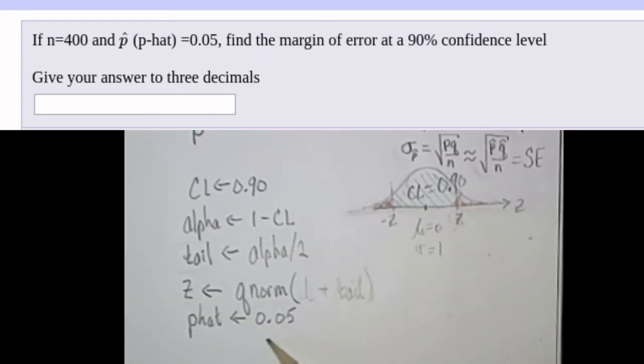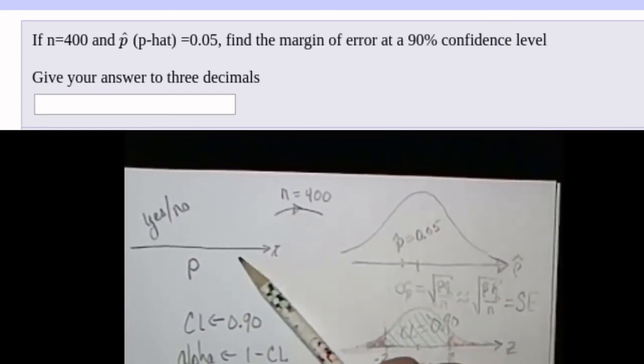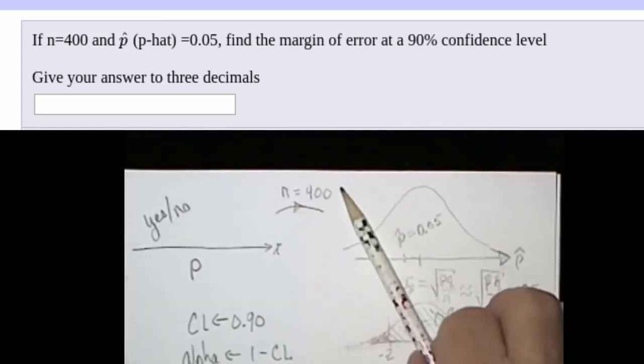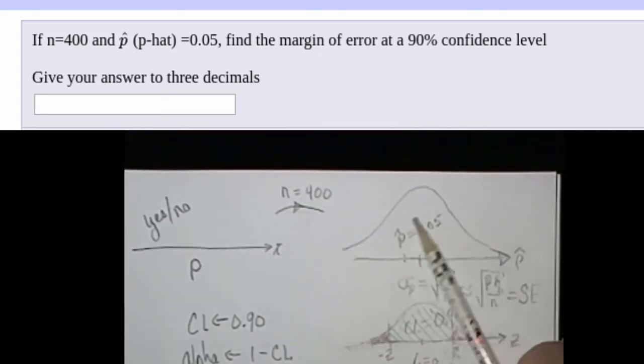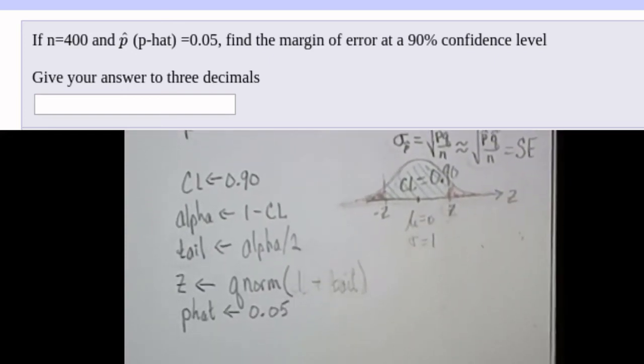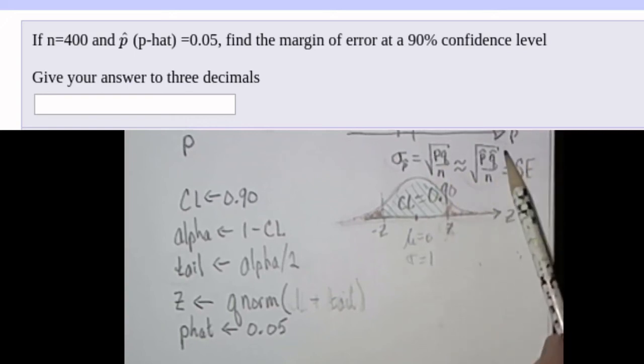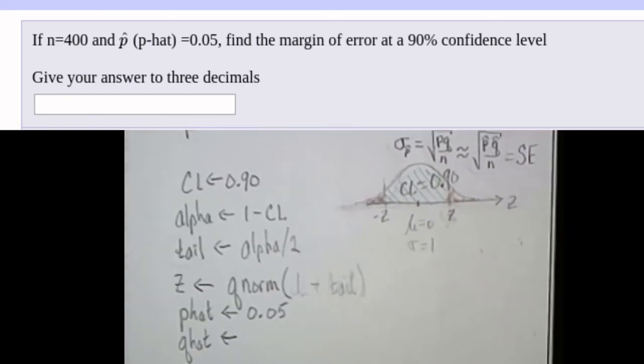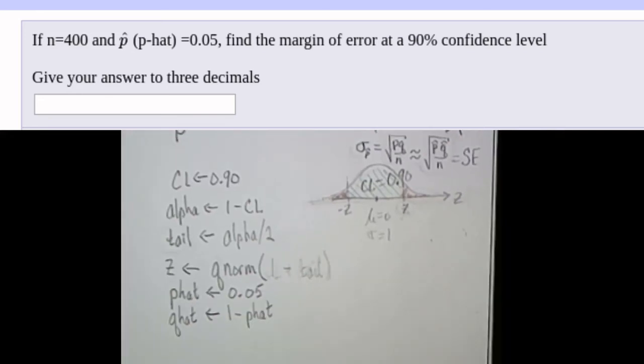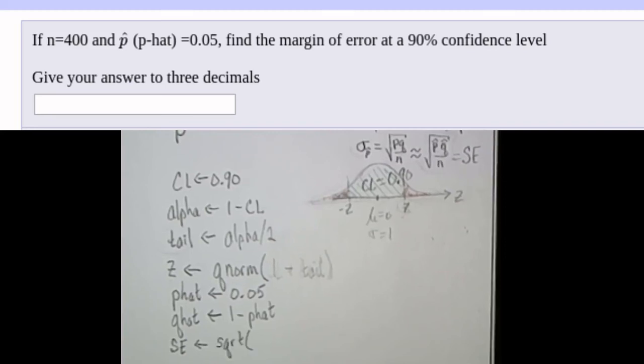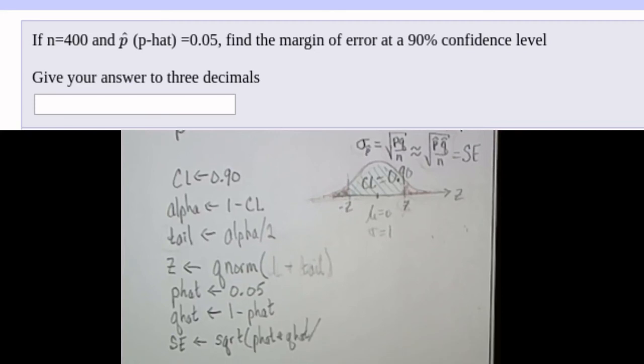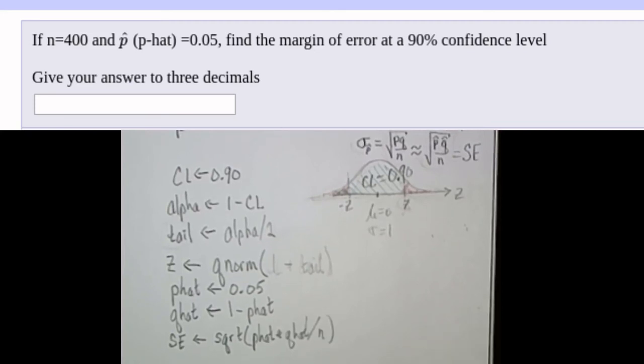So let's find that standard error. They had already calculated for us what P hat was. It's 5%. So there's the P hat that they had calculated because they had looked at a sample of 400 of them, and however many successes there were, they had calculated that P hat for us. So what we'll need to do to find our standard error, will be to first find Q hat. P hat is the estimate of probability of success, and Q hat is the estimate of probability of failure, so it's 1 minus P hat. So the standard error is calculated as the square root of P hat times Q hat divided by N.